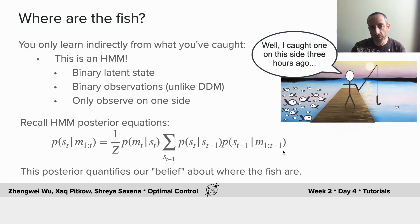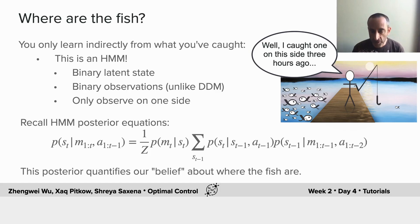And now, the only thing that we have to do is update that equation according to the fact that we're making actions that affect the world state. That is, the state of the fish and us, especially us. Now we have the same probabilities, but they're also conditioned on what actions we've taken, but it's still recurrence. Now this posterior will quantify our belief about where the fish are.